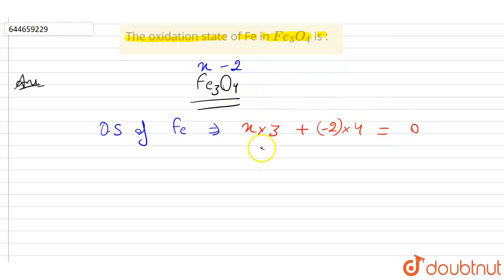So, 3x minus 8 equals 0. Therefore, 3x equals plus 8, so x equals plus 8 by 3.